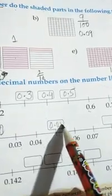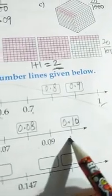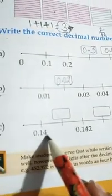Now next is Part B. Here 0.01, then 0.02, 0.03, 0.04, 0.05, 0.06, 0.07, 0.08, 0.09, then here will be 0.10.